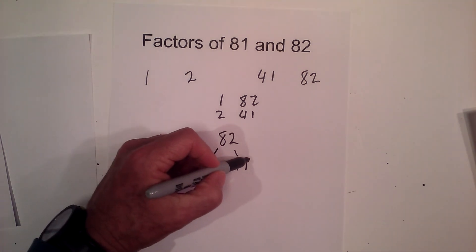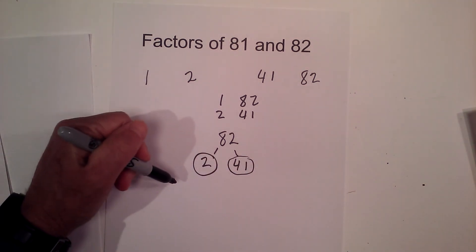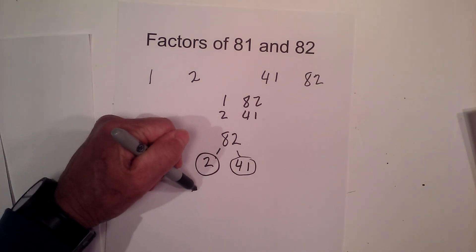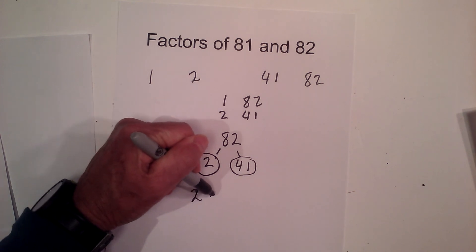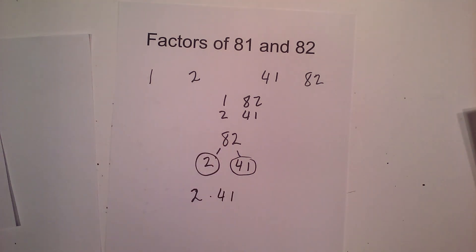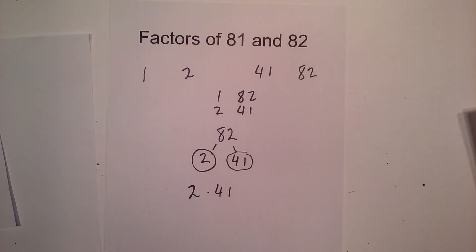So the prime factors of 82 are 2 and 41. 2 times 41. I hope that helps, and Moomoo Math uploads a new math and science video every day. Please subscribe and share.